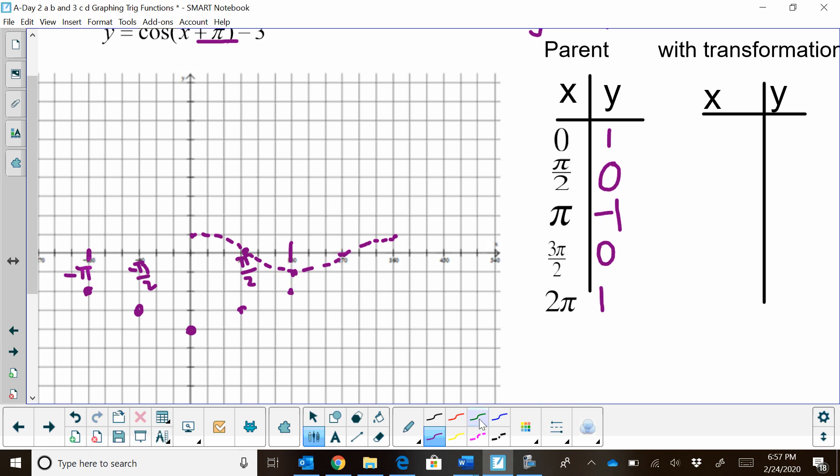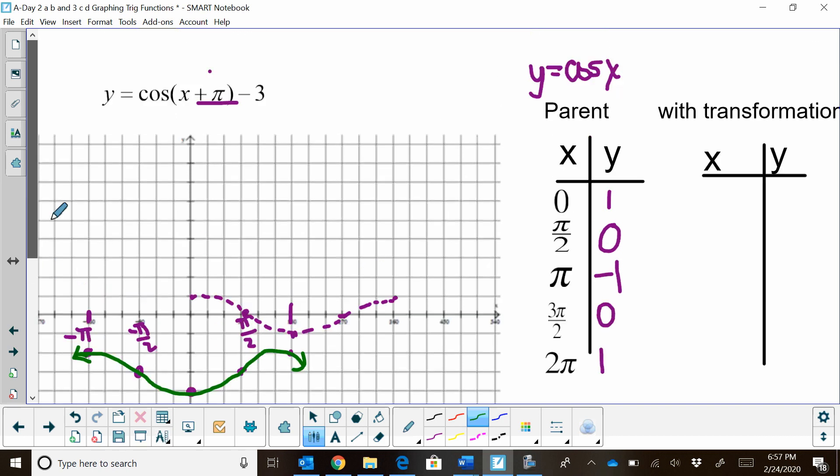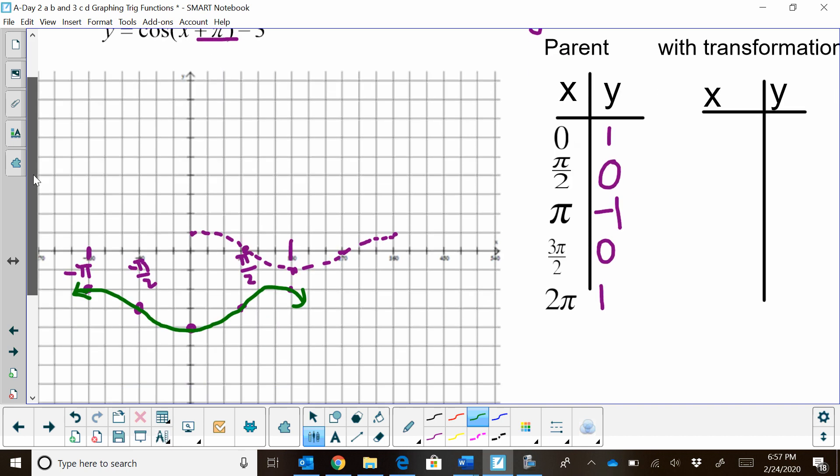Let's graph in green this time. Here is my graph, and it is continuous. That is the graph of y equals cosine of x plus pi minus 3.